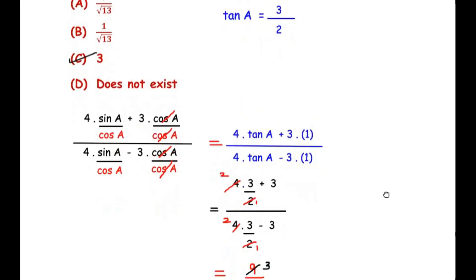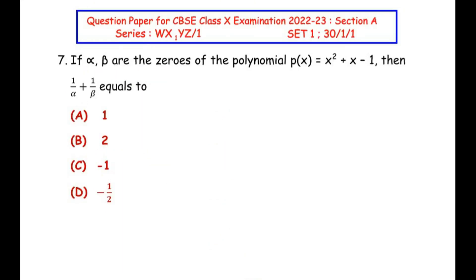Now let us move on to the 7th question, which is from the polynomials chapter. If alpha and beta are the zeros of the polynomial p(x) = x² + x − 1, then 1/α + 1/β equals what? We have to find the value of 1/α + 1/β, where alpha and beta are the zeros of the given polynomial.